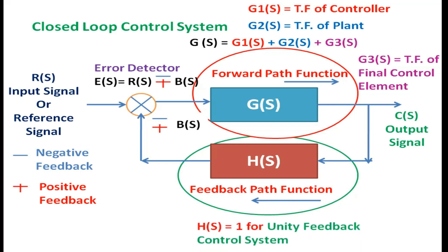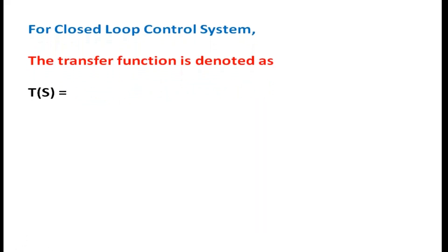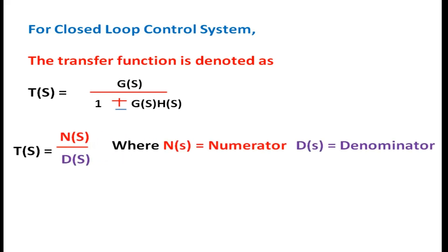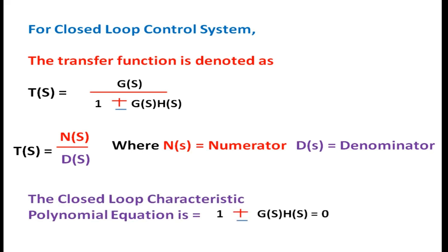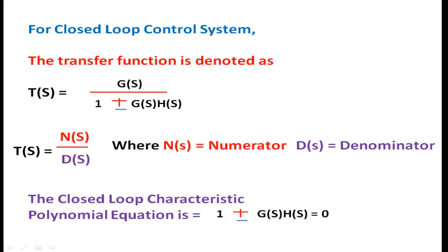G1(S) is the transfer function of the controller. G2(S) is the transfer function of the plant. G3(S) is the transfer function of the final control element. For unity feedback, H(S) = 1. The closed loop transfer function T(S) = G(S) / (1 ± G(S)·H(S)), which equals N(S)/D(S). The closed loop characteristic polynomial equation is 1 ± G(S)·H(S) = 0, and this equation is used to find the order of the control system.